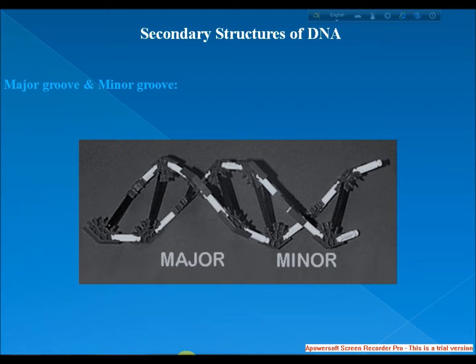The minor groove contains the pyrimidine O2 and the purine N3 of the base pair, and the major groove is on the opposite side of the pair. The methyl group of thymine lies in the major groove. In the minor groove, N3 of adenine or guanine and O2 of thymine or cytosine can serve as hydrogen bond acceptors, and the amino group attached to C2 of guanine can be a hydrogen bond donor.